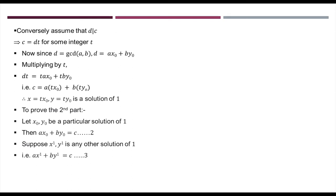Now we prove the second part of the theorem: if x naught, y naught is a particular solution, then all other solutions can be found using the given formulas. Since x naught, y naught is a particular solution, we have ax naught plus by naught equal to c. Suppose x dash, y dash is any other solution, then ax dash plus by dash equal to c. Comparing these two equations, we get ax naught plus by naught equal to ax dash plus by dash, which gives a(x dash minus x naught) equal to b(y naught minus y dash).